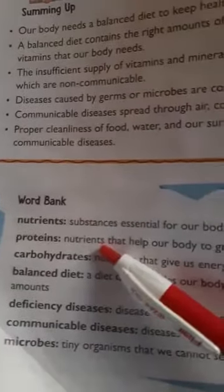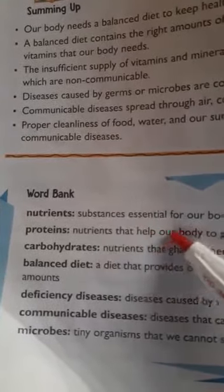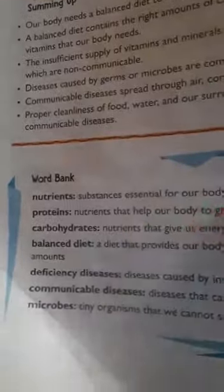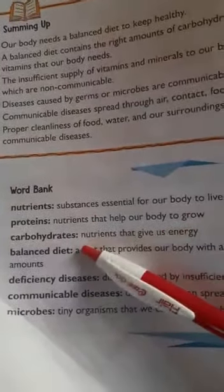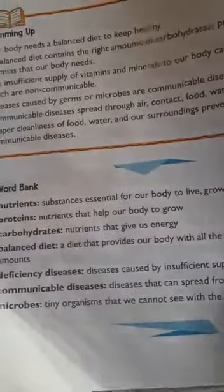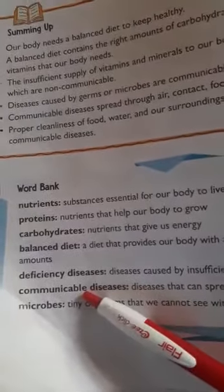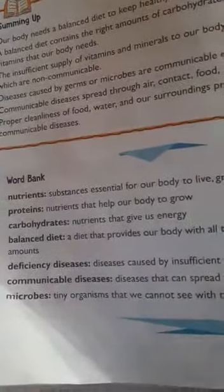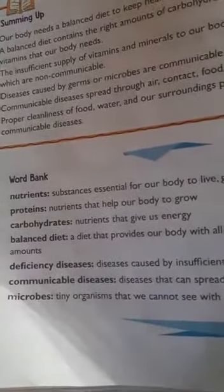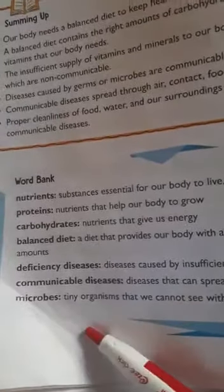New vocabulary: nutrients are substances essential for our body to live, grow, and remain healthy. Proteins are nutrients that help our body to grow. Carbohydrates are nutrients that give us energy. A balanced diet provides our body with all the essential nutrients. Deficiency diseases are diseases caused by insufficient supply of nutrients in our body. Communicable diseases are diseases that can spread from one person to another.